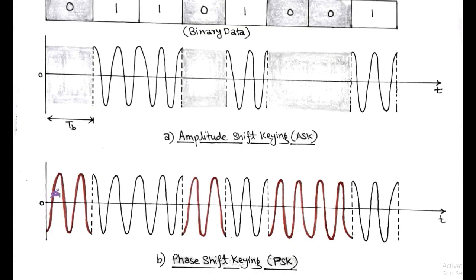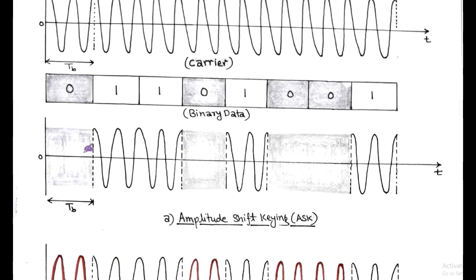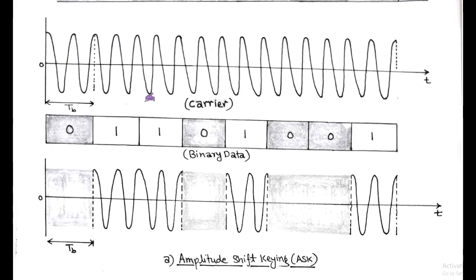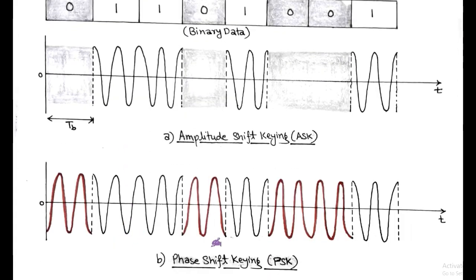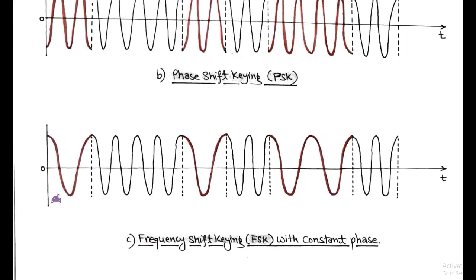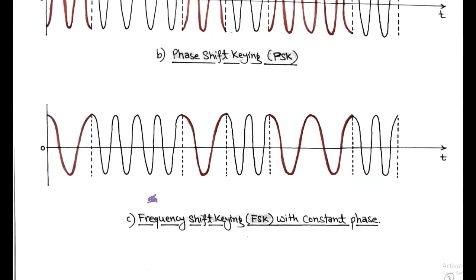Next is binary PSK. In this scheme, the carrier phase is switched between two possible values — 0° or 180° phase shift. Symbol 0 is represented by a 180° phase shift, while for symbol 1 there is no phase change, that is 0°. In case of FSK, symbol 0 is represented as the carrier frequency changed to just half, and for symbol 1 the frequency of the carrier is unchanged. In FSK, we consider a constant phase. We may also represent symbol 0 or symbol 1 using any other frequencies — for example, F1 for symbol 0 and F2 for symbol 1 — where F1 and F2 are different from the carrier frequency.